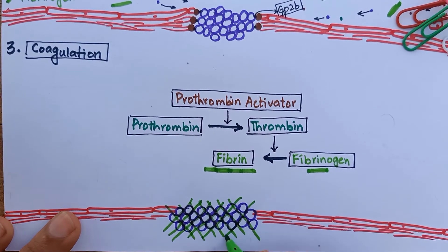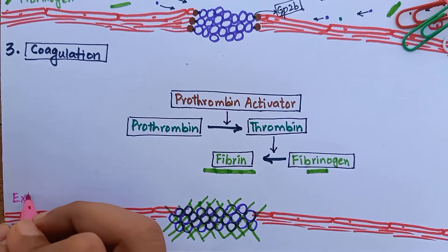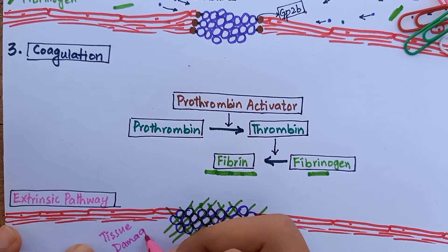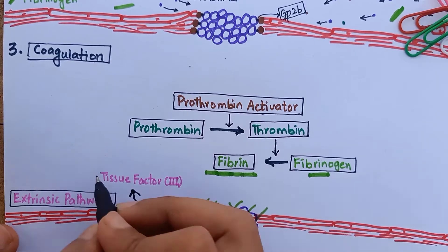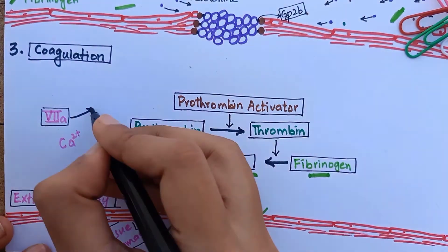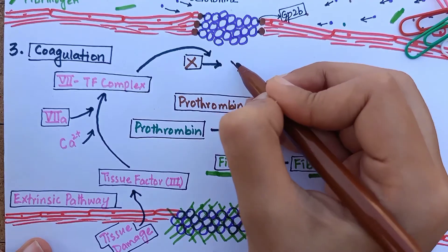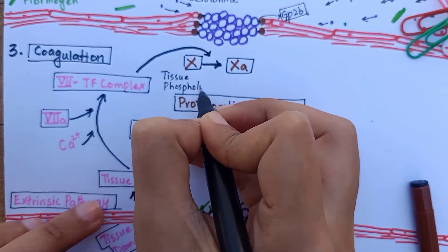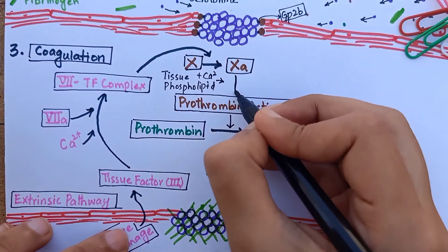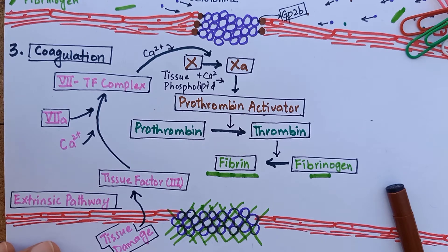There are two mechanisms for initiation of clotting: the extrinsic and intrinsic pathway. The extrinsic pathway begins with trauma to the vascular wall. The traumatized tissue releases a substance called tissue factor, or factor 3. Tissue factor combines with factor 7 in the presence of calcium to form a factor 7–tissue factor complex, which acts enzymatically on factor 10 to form activated factor 10. Activated factor 10 combines with tissue phospholipids to form prothrombin activator. It is called the extrinsic pathway because it is activated by tissue factor, which normally does not belong to plasma.